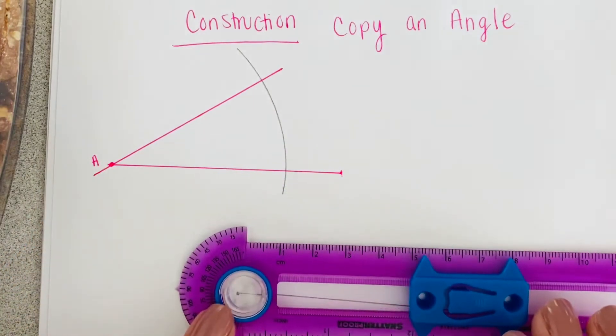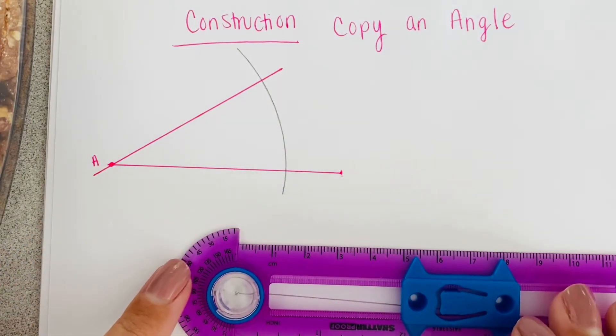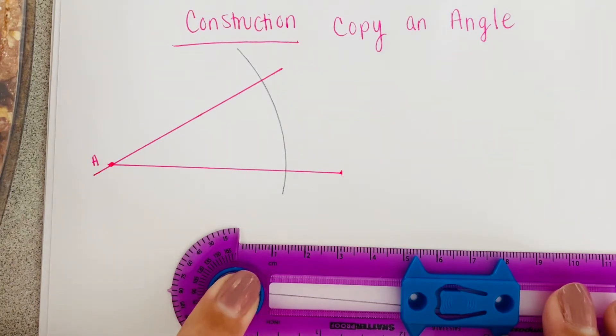We're going to slide it nicely over to A prime. Hover over A prime. Make sure your eye is perfectly positioned.